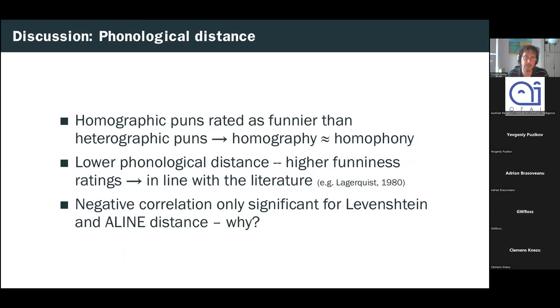So, some brief discussion of the results. Well, we did see a large variance in funniness ratings across both pun types. And why might this be? Well, probably because punting is actually a rather complex phenomenon. We saw that a lower phonological distance resulted in higher funniness ratings, which is in line with the suppositions that had been advanced in previous literature. For example, Lagerquist in 1980. But it's rather interesting that the negative correlation was only significant for Levenstein in airline distance. And why is this? It's not exactly clear, because even without taking into account the specific phonological features, the mere orthographic distance, which is all that Levenstein does, seems to be enough to be associated with funniness rating stimuli when written. So, A-line, even though it's multi-weighted, we didn't quite see the same results.